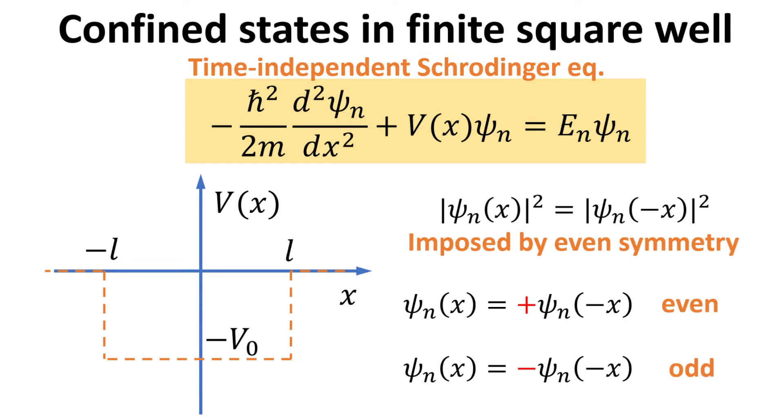Thus, the wavefunction ψn would admit two classes of solutions, one that is even with respect to x and one that is odd.